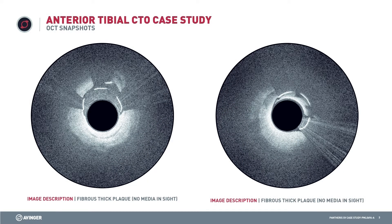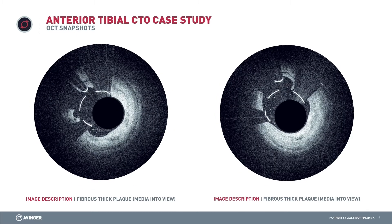You'll see on the screen some of the images we obtained as we were performing the atherectomy. You can see there's heterogeneous material within the plaque — there are fibrous segments that are thick, and then there are other segments that have a thin layer of fibrous plaque with a lipid core at the base. As you can see from the next set of Pantheris images, you can see a trough adjacent to where we cut, and that shows what plaque we were actually able to debulk from this anterior tibial artery.